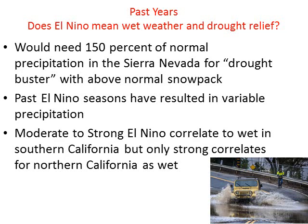We are in a drought across California — the worst four-year drought on record. What can El Niño bring? We'd need at least 150% of normal precipitation in the Sierra Nevada to become a drought buster, including having deep snowpack. Past El Niño seasons have varied in results, but a moderate to strong correlation does exist in California, especially Southern California, for wet years.